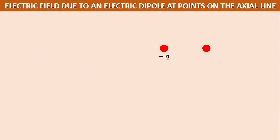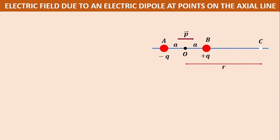There are two charges here: minus q and plus q. The line joining these two charges is called the axial line. The midpoint is O. From midpoint O, these charges are at a distance a each. The electric dipole moment is from minus q to plus q, represented by the letter p vector. At a point C, what is the electric field due to these two charges — what we call a dipole — is what we are going to find. The electric field at C is e-axial.